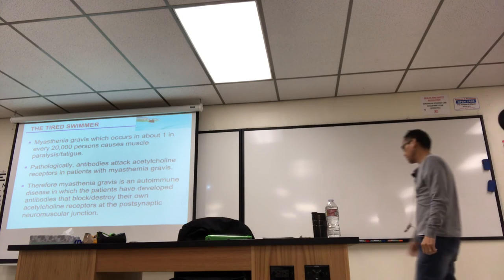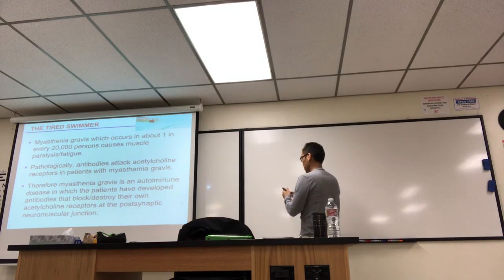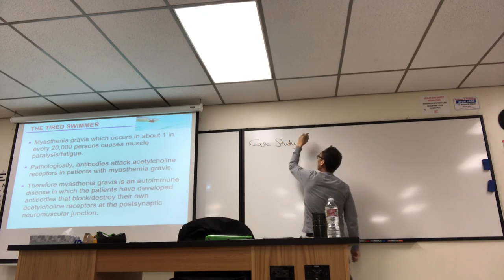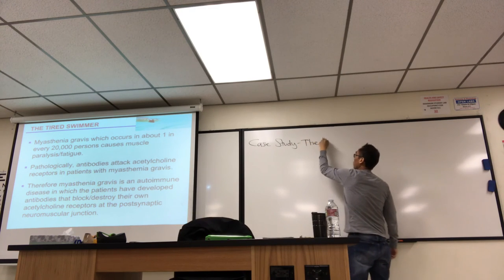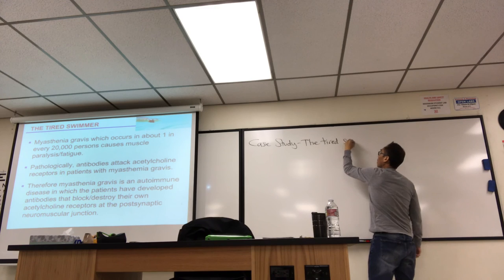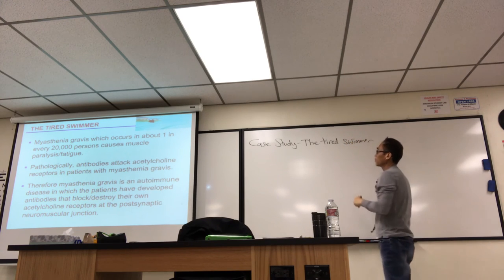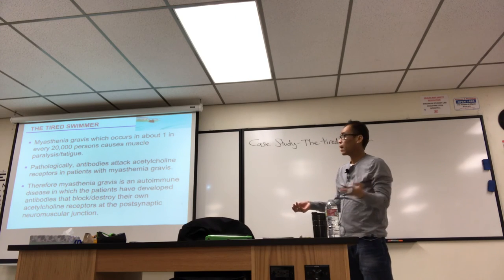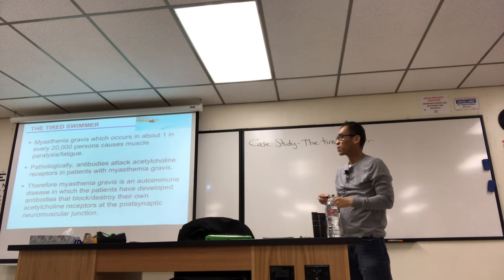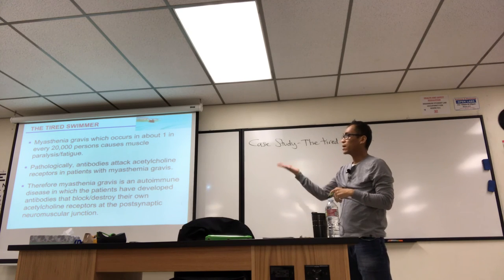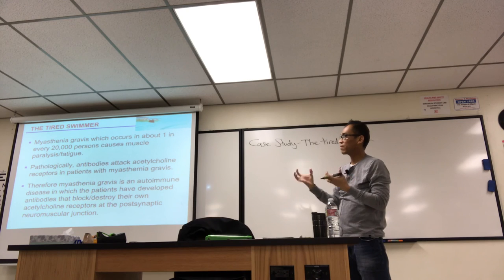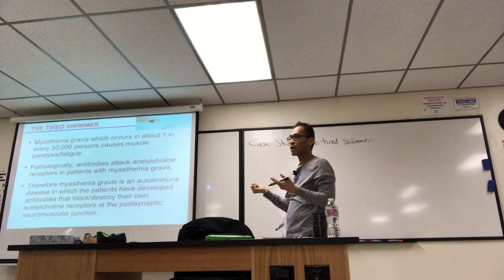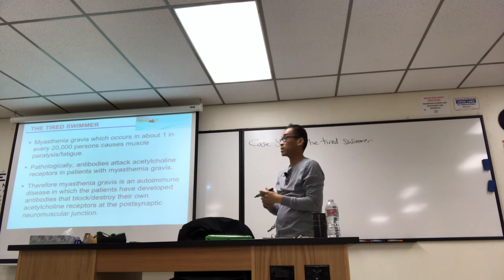So in the case study the disease is something called Myasthenia Gravis, the tired swimmer. And I guess you knew it had something to do with muscle tissue. It means weak muscle - myasthenia gravis - which occurs in about one in every 20,000 persons. So it's very rare, which is why I was surprised I had a student who had this.